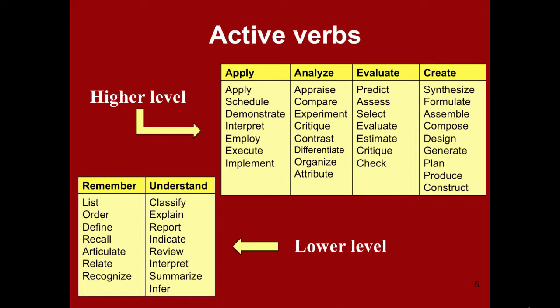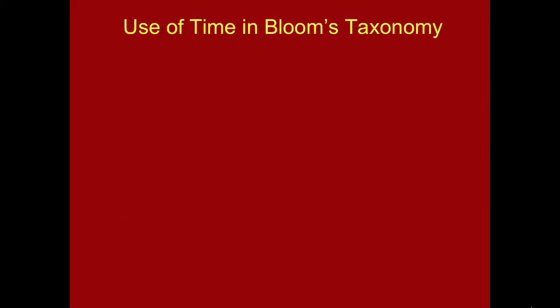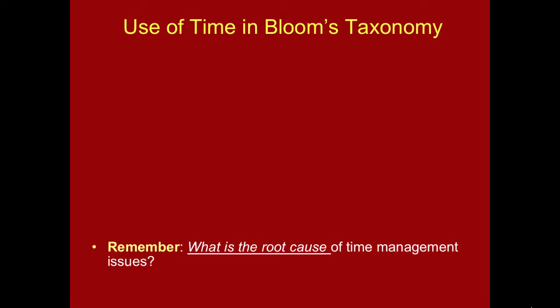Let's look at an example of how we would use these verbs to prepare for an exam on use of time. In applying Bloom's Taxonomy to create higher and lower level questions about the use of time, an active verb has been taken from each box and used here. As we are going through these questions, reflect on how much cognitive processing or thinking you would have to do before you could answer these questions on an exam, and how much more information you would need to retrieve from your long-term memory to successfully answer the higher level questions. Remember: what is the root cause of time management issues? While we didn't use the verb recall, the verb recall is implied in the phrase, 'what is the root cause?'